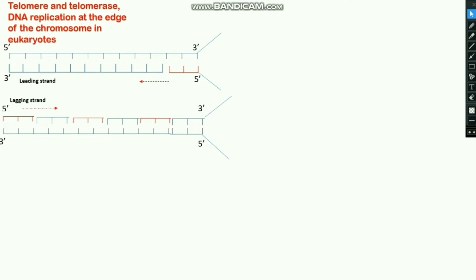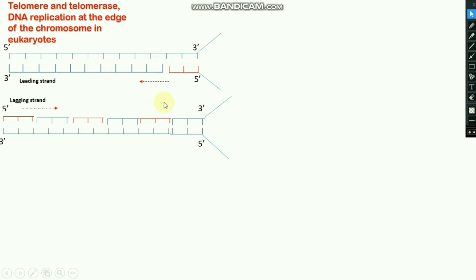DNA replication at the edge of the chromosome in eukaryotes. The leading strand replication is towards the replication fork, but the lagging strand replicates in the opposite direction of the replication fork, as you see in this diagram. After the replication process, all of the primers are removed by the RNase H enzyme and FEN1. After removal of the primers in the leading strand, there is no problem.